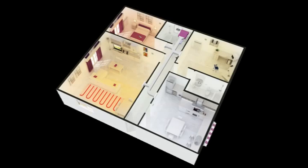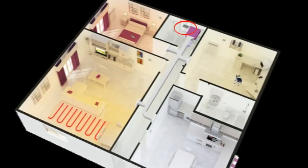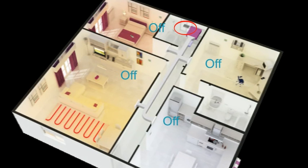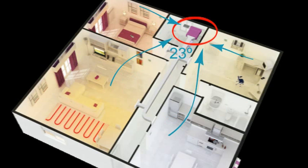The Airzone communication gateway sets the setpoint temperature in the AC unit depending on the working mode, the number of zones on demand, and each zone's setpoint temperature, looking for an increase in thermal comfort and energy savings.